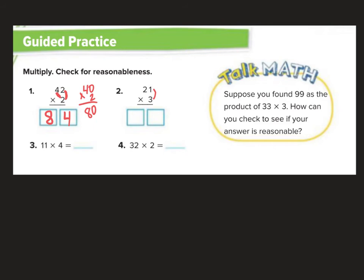Here I have 3 times 1 is 3. 3 times 2, 3 groups of 2, 2, 4, 6 is 6. Now, if I were to check, I would do 20 times 3, and that is 20, 40, 60. Are 63 and 60 close to each other? Yes, yes they are.